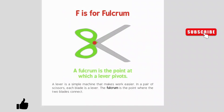F is for fulcrum. A fulcrum is the point at which a lever pivots. A lever is a simple machine that makes work easier. In a pair of scissors, each blade is a lever. A fulcrum is the point where the two blades connect.